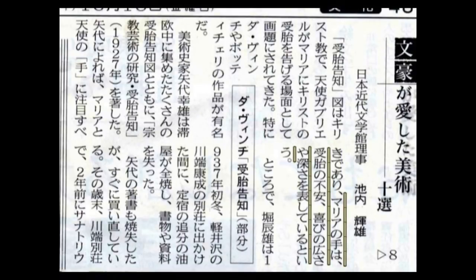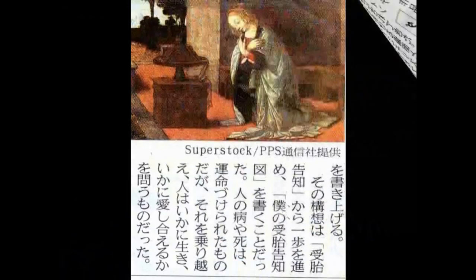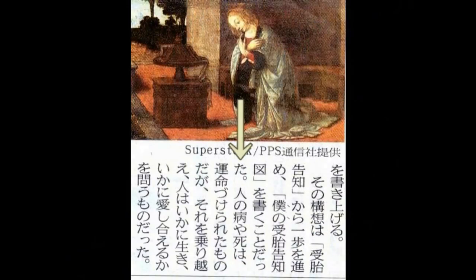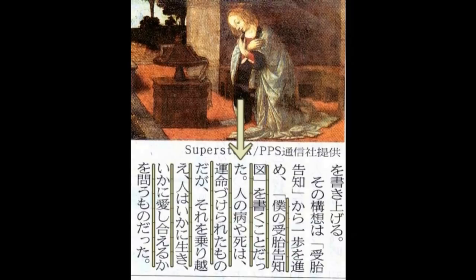マリアの手は、受胎の不安、喜びの広さや深さを表していると言う。人の病気や死は運命づけられたものだが、それを乗り越え、人はいかに生き、いかに愛し合うかを問うものだった。では、ラファエルを紹介させてください。